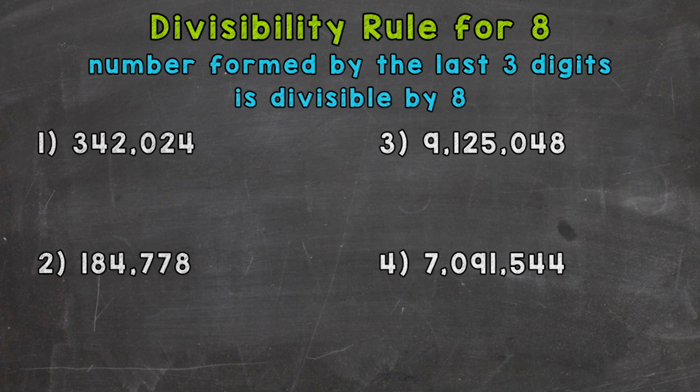In the case of this video, we have four numbers that we're going to go through and see if they are divisible by 8 based on the rule at the top of the screen. If the number formed by the last three digits is divisible by 8, then the original number is divisible by 8. So let's go through our examples and see what that rule means.